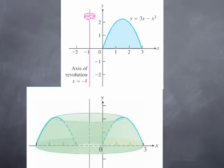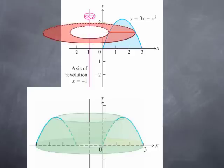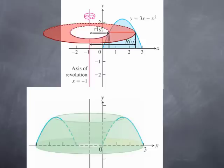Because we are rotating about a vertical line, the cross-sections would be by planes y equal to a constant. Therefore we would rotate line segments about the line x equals negative 1, getting a washer centered on that line. In order to calculate the volume, we would need to know the inner and outer radii of this washer, which means finding the x values corresponding to where the line segment intersects y equals 3x minus x squared — in other words, solving 3x minus x squared equal y for x as a function of y.